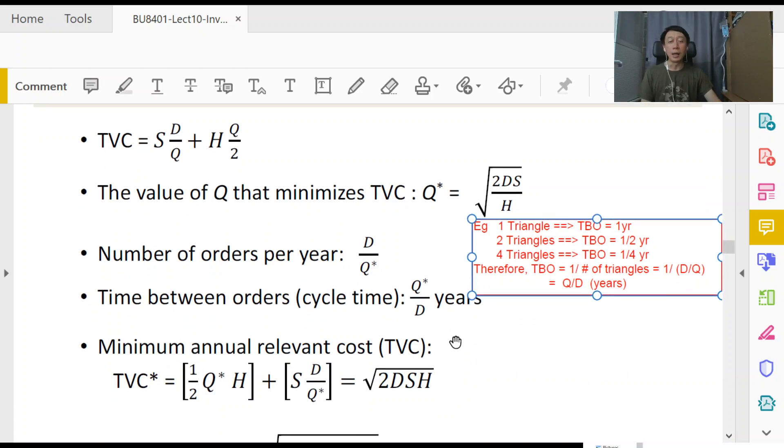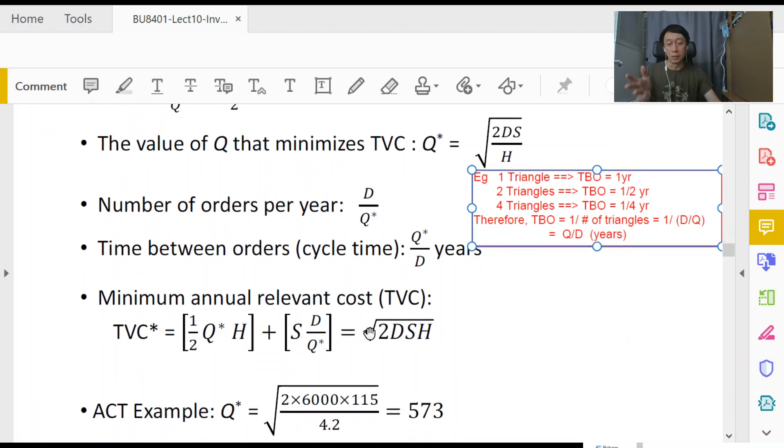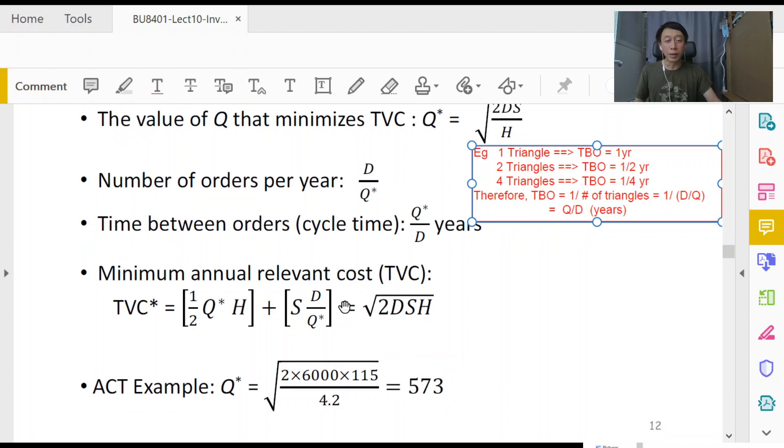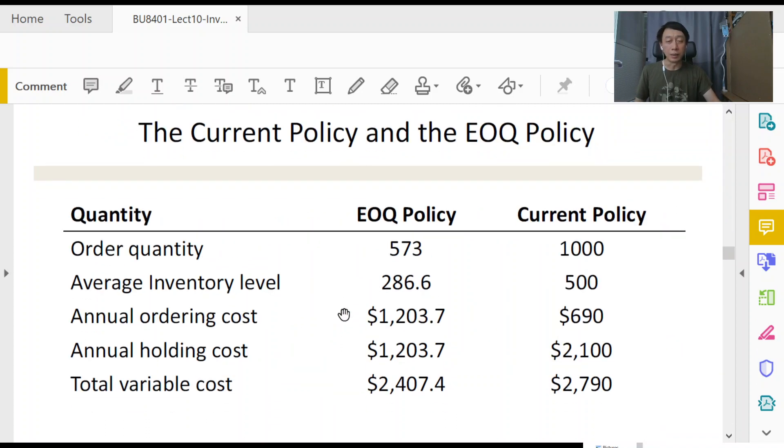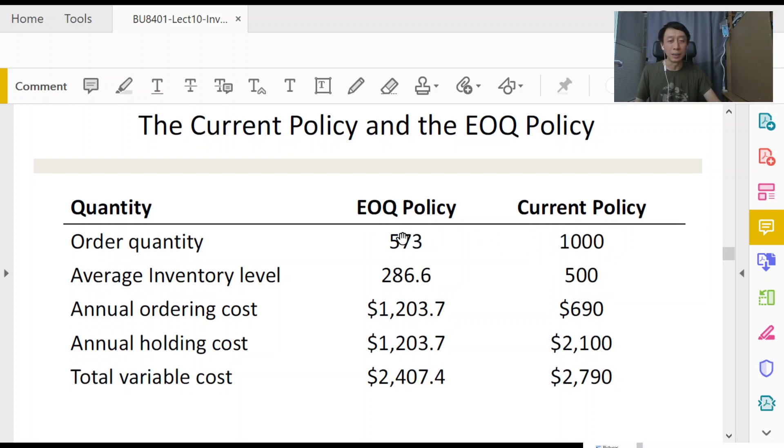We basically have covered everything here. The slides show you some comparison between current policy which doesn't listen to EOQ versus EOQ policy that adheres to using EOQ. We get annual ordering cost being exactly equal to holding cost. That is not by chance, that's always the case.